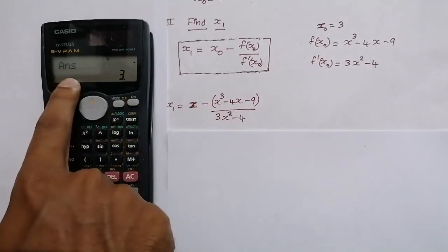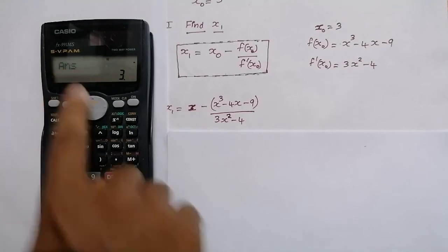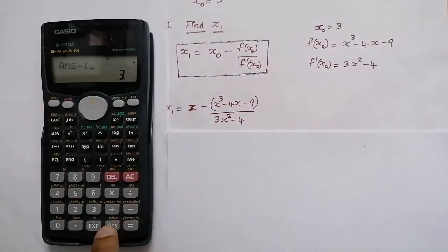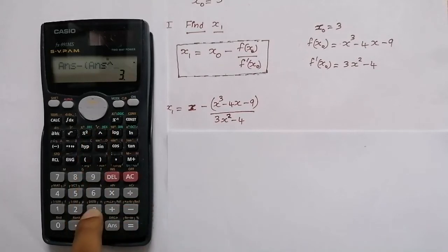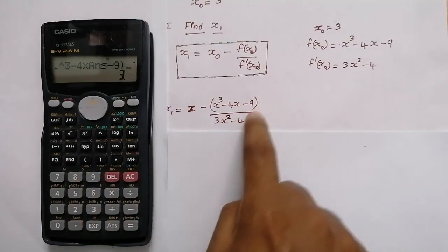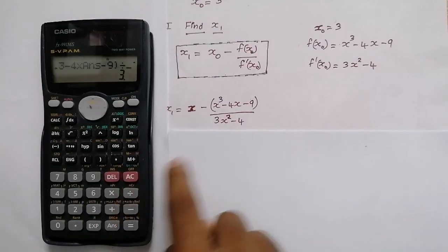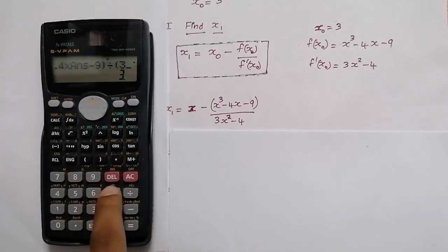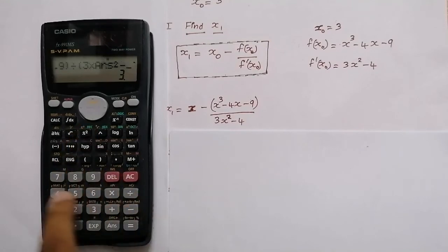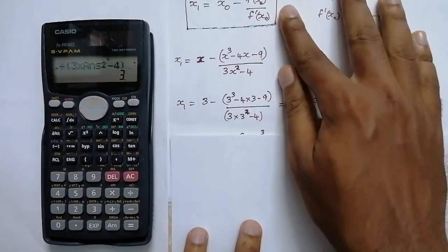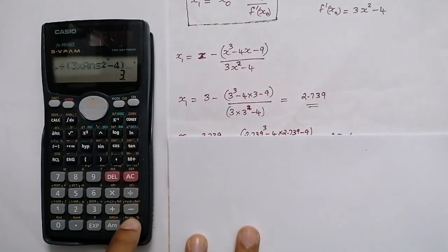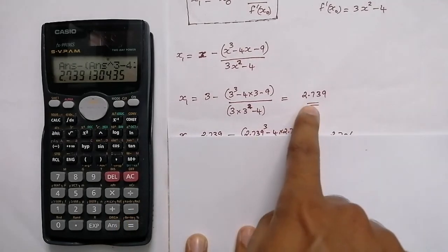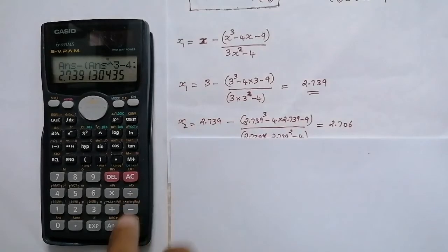To substitute into the calculator, wherever we see X in the formula we put ANS. So we type: ANS minus open bracket, ANS raised to 3, minus 4 into ANS, minus 9, close bracket, divided by f'(X) which is 3X² - 4. For that denominator, open bracket, 3 into ANS squared, minus 4, close bracket. Now press equal to to find X1.